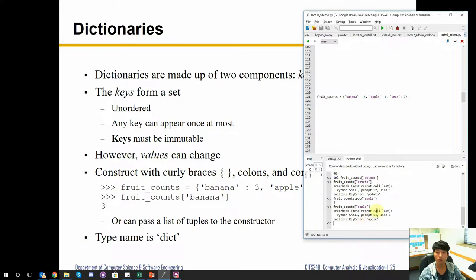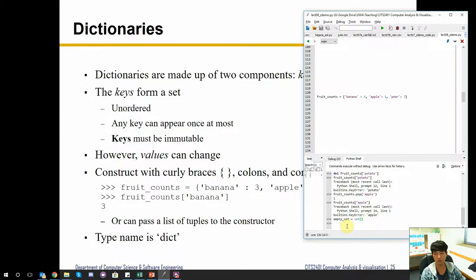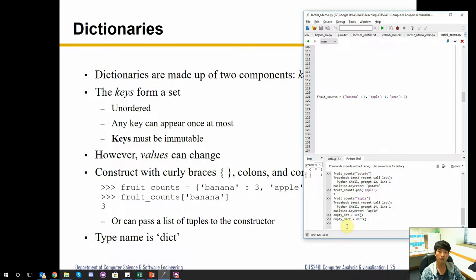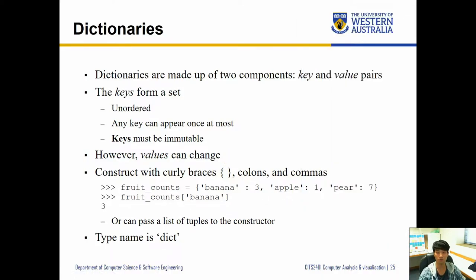Going back to creating empty dictionaries — just as we can create an empty set using the `set()` constructor, we can create an empty dictionary using the `dict()` constructor. The result is an empty dictionary. You can either use curly brackets to specify an empty dictionary or use the constructor. Most of the time people use curly brackets, and that is common practice, so you don't have to worry about using the constructor all the time.